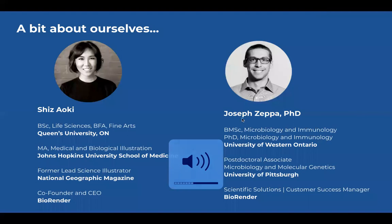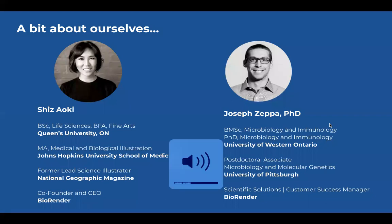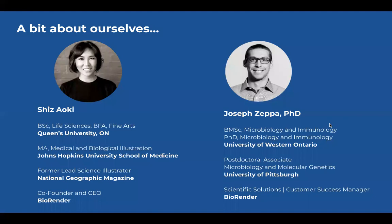I'm Joseph Zappa. I got my BMSc and PhD from the Department of Microbiology and Immunology at the University of Western Ontario in London, Ontario, Canada. I then did a three-year postdoctoral associateship at the University of Pittsburgh under Dr. Joanne Flynn. My PhD was on Group A Strep, and my postdoc focused on the immunology of tuberculosis in a non-human primate model. I joined BioRender as a Customer Success Manager and Scientific Solutions Consultant.